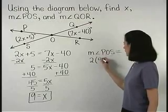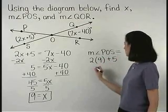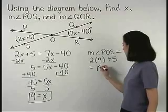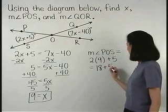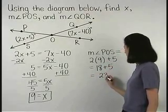is 2 times 9 plus 5, which is 18 plus 5, or 23 degrees.